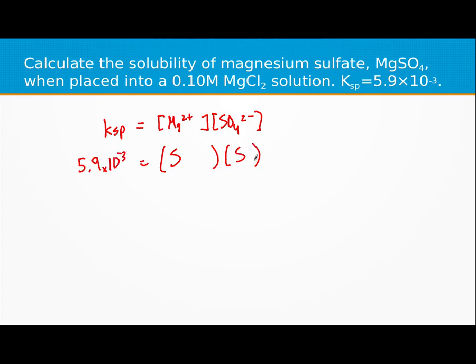If we wanted to solve just for the solubility of magnesium sulfate, we would just need to take the square root of 5.9 times 10 to the negative third. But in this case, we have some of this in here, so we need to add that to our sample.